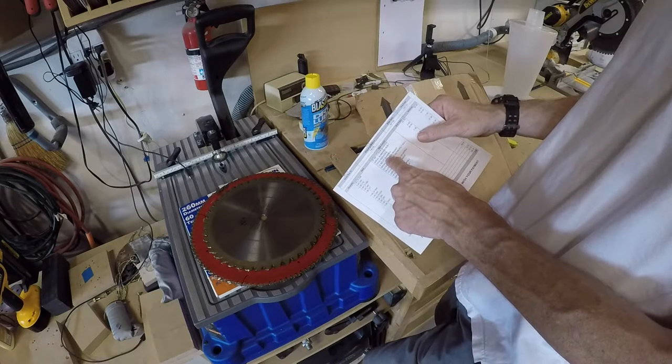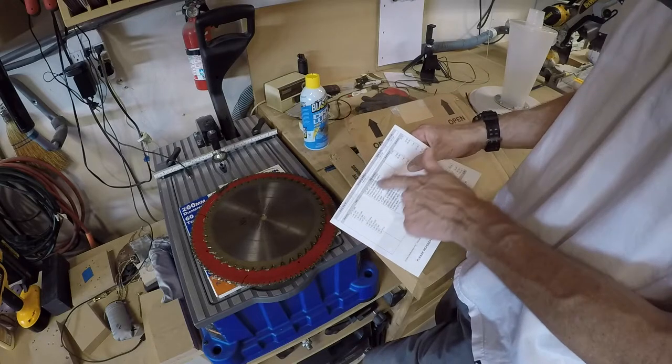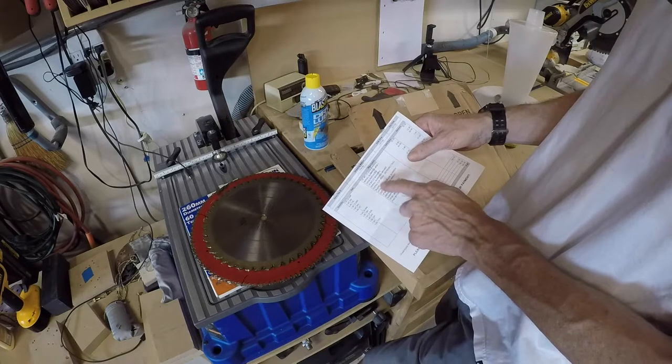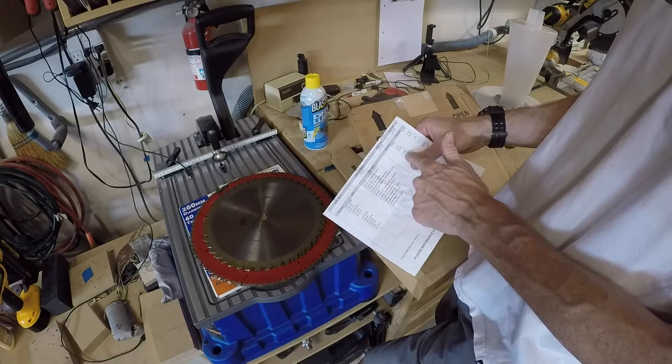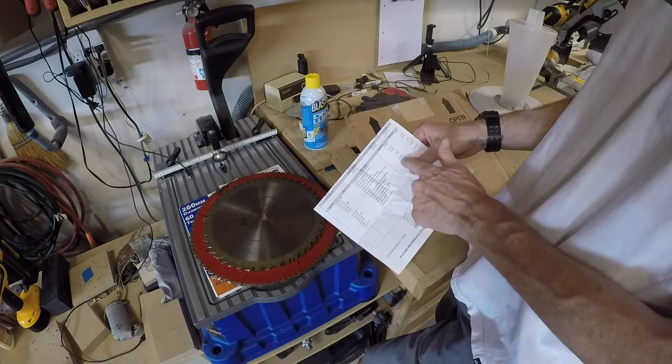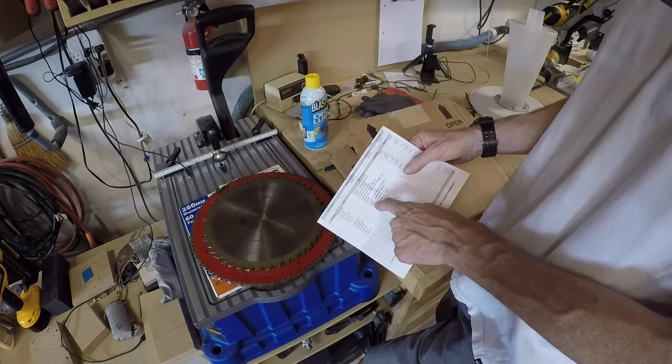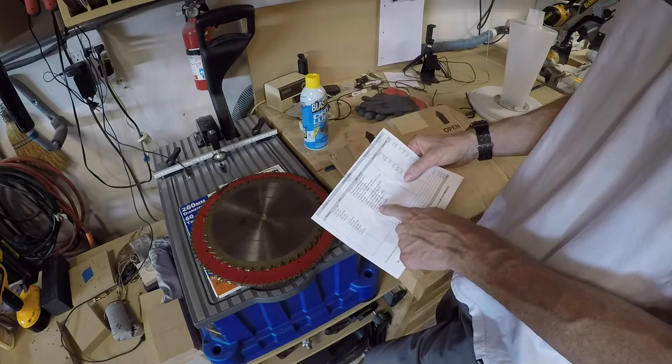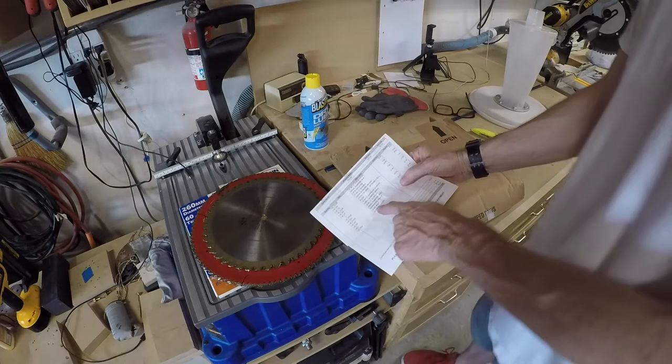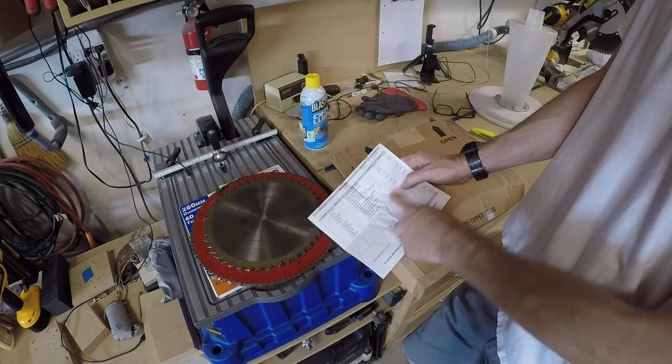12-inch 80-tooth chop master was $30 bucks. Extra top grind, extremely dull blade - if you let your blades go too much, they give you a $7 charge. 10-inch 44-tooth, that's the Jesada, that's $27 dollars. 10-inch 30-tooth, $23 bucks. The 10-inch 62-tooth was $27 for the Oshlun.